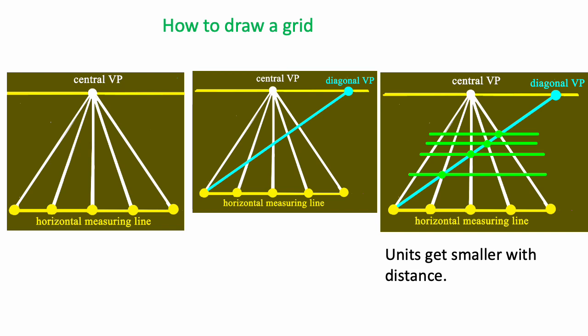This is the easiest way to draw a grid. Start with the horizontal measuring lines with units marked off, which can be equal spacing or unequal, and connect each unit to a point up here, which we'll call the central vanishing point.